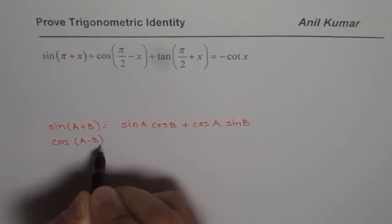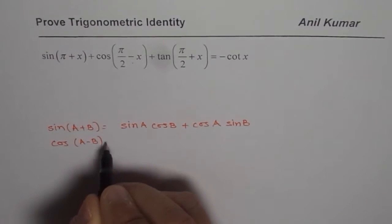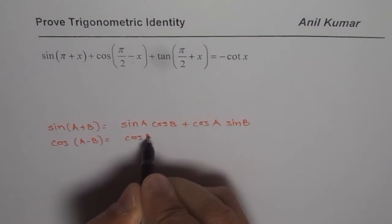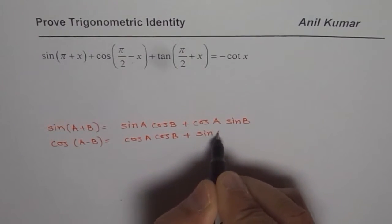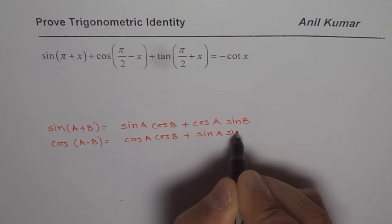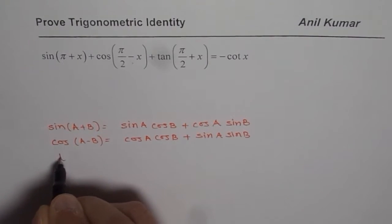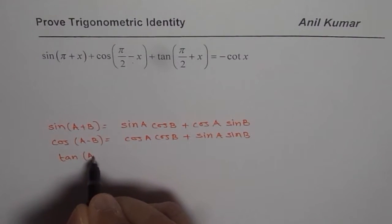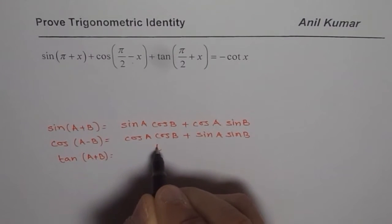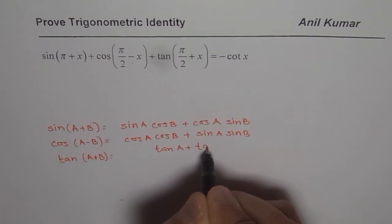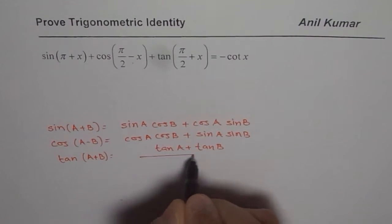You can also apply cos of a minus b formula. Since this is minus, I am writing cos a minus b formula, which is cos a cos b plus sine a sine b. And then you can apply tan a plus b formula to expand the given expressions, which is tan a plus tan b over 1 minus tan a tan b.